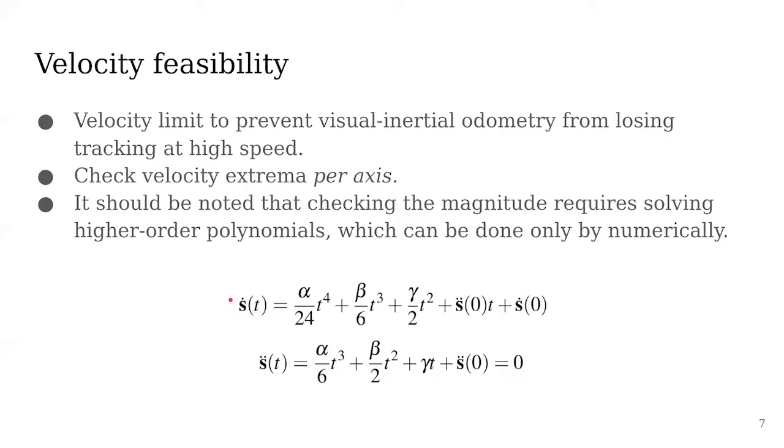It should be noted that we check the velocity per axis. Otherwise, for example, if we were checking the magnitude of the velocity, it would require solving higher-order polynomials, which can only be done numerically. If it's done per axis, it's still a third-order polynomial, so we can use the closed-form root solution.